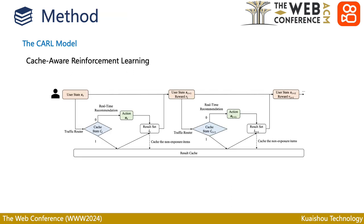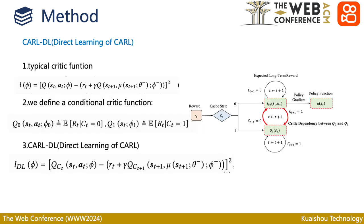Here is a brief view of our model architecture. Firstly, we introduce the direct learning of CARL. Typically, we define the critic function like this. In our situation, we define a conditional critic function, and the direct learning of CARL is formulated accordingly.